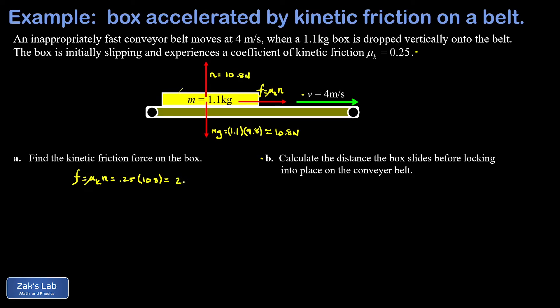To answer part b—the sliding distance before the box reaches 4 meters per second and locks into place—we first need the acceleration. We have a horizontal force of 2.7 newtons.